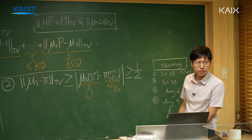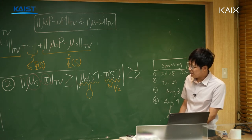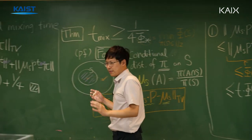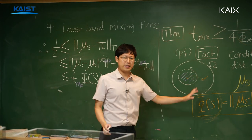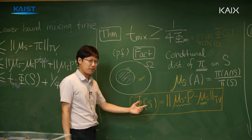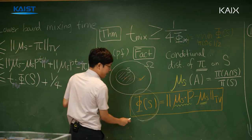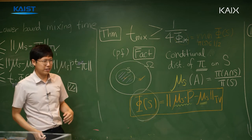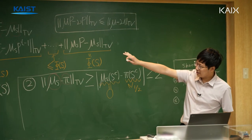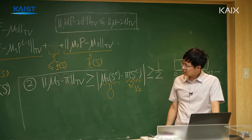Any questions about the proof? The key idea is the identity relating the isoperimetric constant to the total variation distance of the conditional measure. Given that identity, the proof is quite straightforward. The identity itself has great importance.